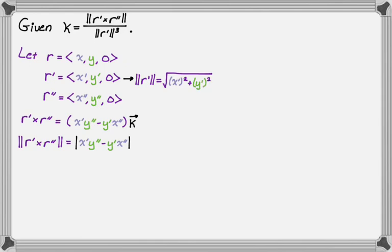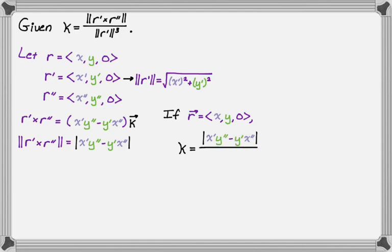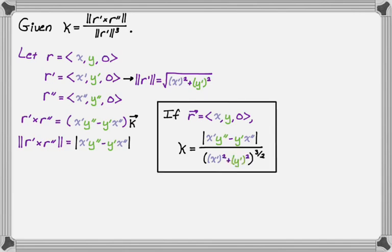By substitution — thinking of the square root as the one-half power, so when raised to the third I get the three-halves power — if r is parameterized as (x, y, 0), the curvature is the absolute value of (x prime · y double prime minus y prime · x double prime) over the quantity (x prime squared plus y prime squared) to the three-halves. That's another formula, pretty useful if you're working with 2D parameterized curves.